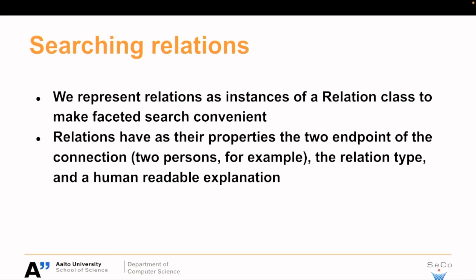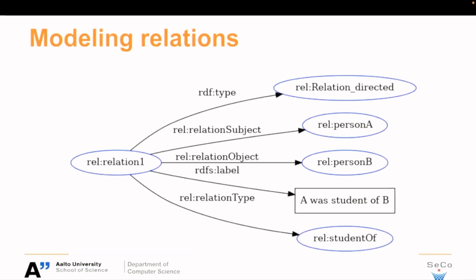The relation instances we create with construct queries have properties based on the two endpoints of the connection — in this case, person to two persons. We are using directed relations, so there is a separate subject and object for the relation. And there's the relation type, plus a human-readable description of the connection. It can also have other properties.